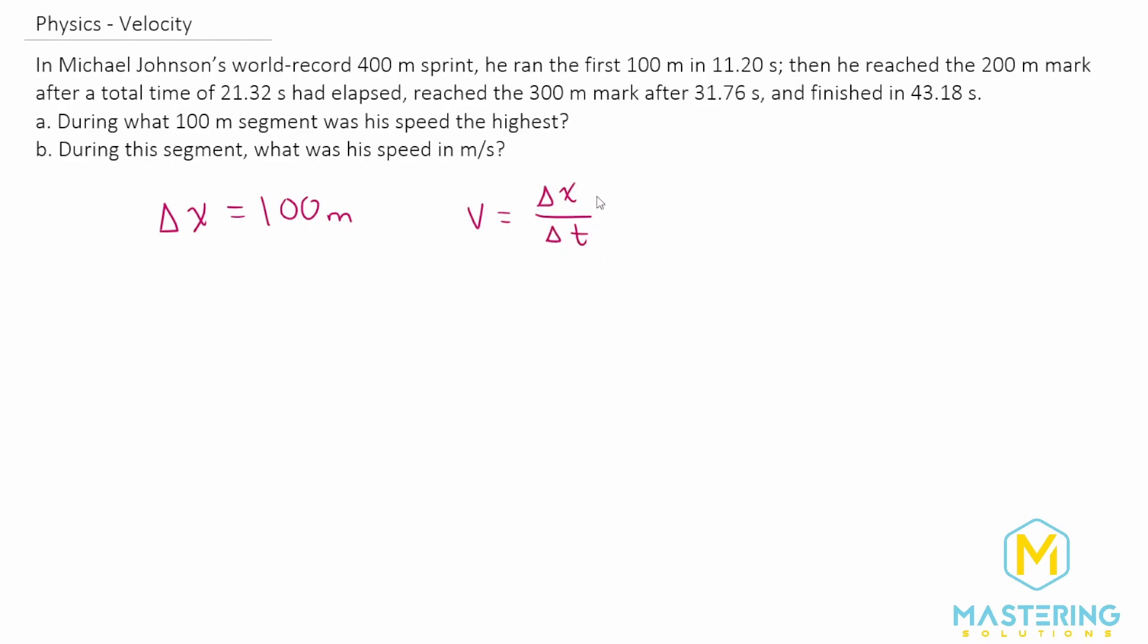So since the delta x is staying the exact same, whatever section has the fastest time will make the velocity larger. So for every section we actually don't have to calculate the speed, we just need to figure out which one had the shortest time and that will therefore be his fastest section, and then we can calculate what the exact speed was for it.